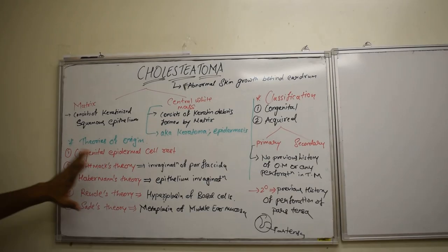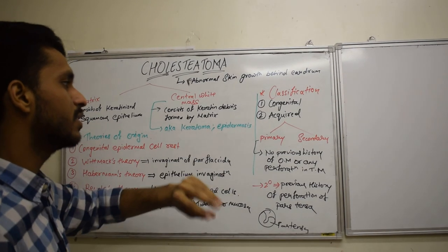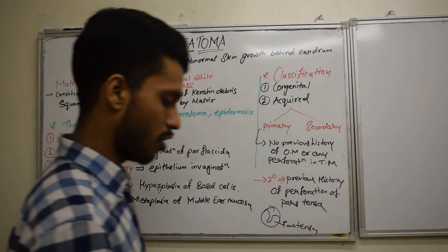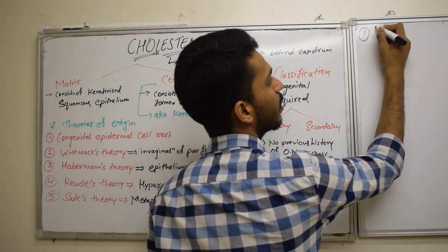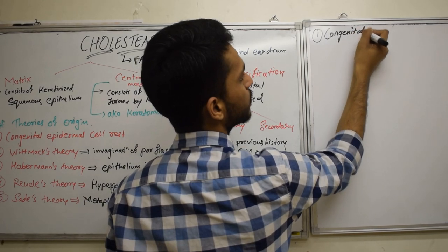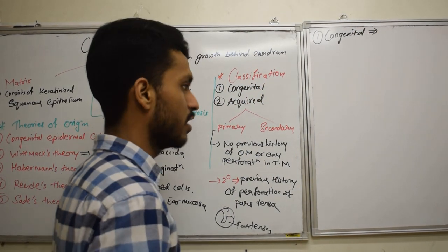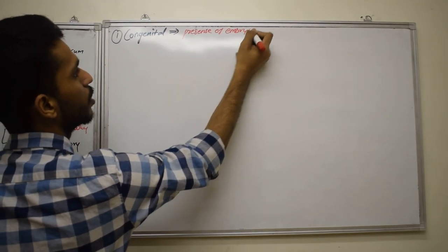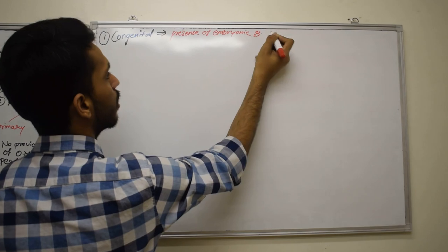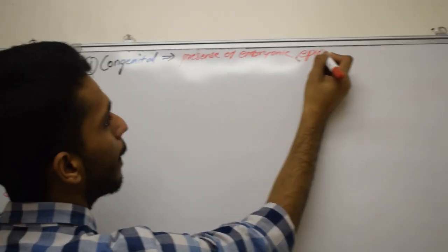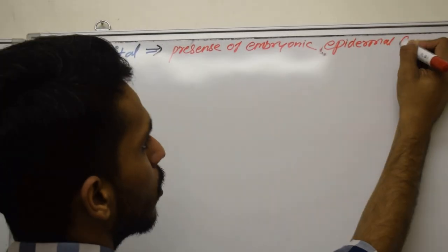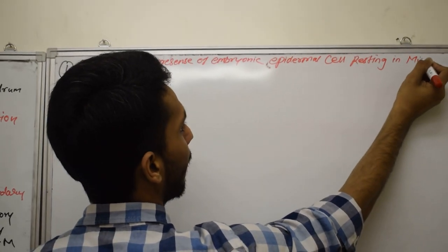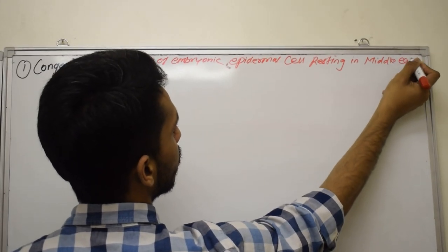This covers the theory and classification — congenital and acquired. Now let's discuss the pathogenesis. Congenital Cholesteatoma occurs due to the embryonic presence of epidermal cells resting in the middle ear or tympanic membrane.